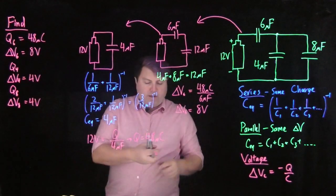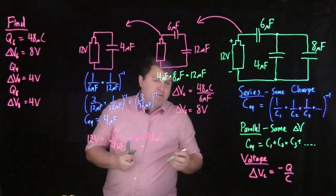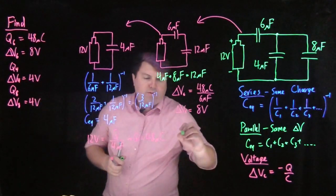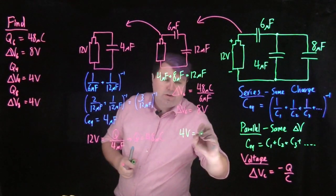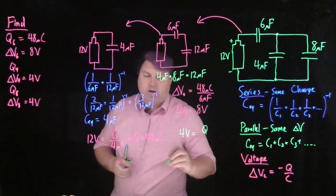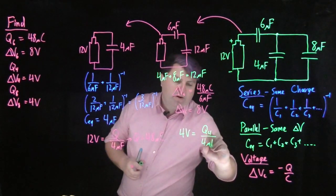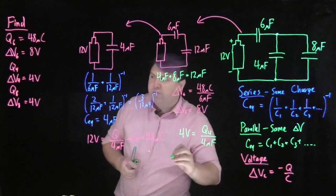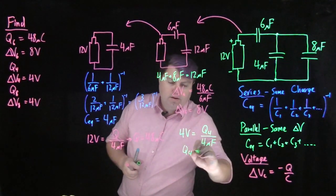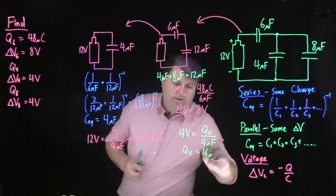Just a little bit left to go. I need to find the charge for both of these. For the 4, it's 4 volts equals the charge over the 4 microfarad times 4 microfarads. 4 times 4 gets me 16 microcoulombs.